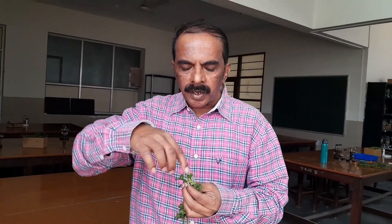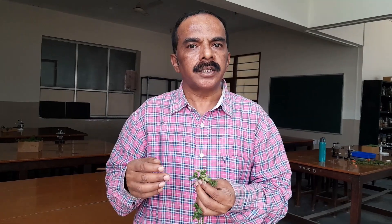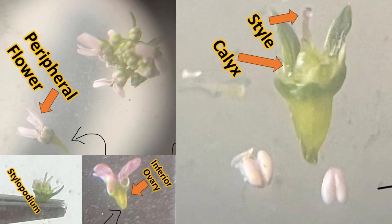The flowers are also unique in this case because there are two types of flowers. The outer flowers are zygomorphic, whereas the inner flowers are actinomorphic. The zygomorphic flowers will have two different types of petals. The anterior and posterior petals are of equal size, whereas the lateral petals are unequal.